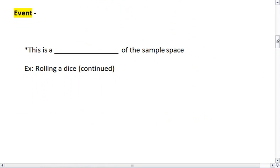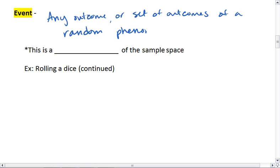And now we need to look at an event. An event is any outcome or set of outcomes of a random phenomenon. And this is a subset of the sample space.